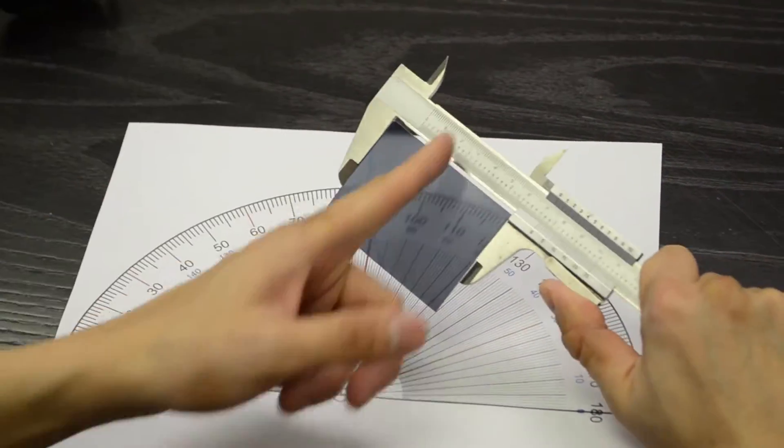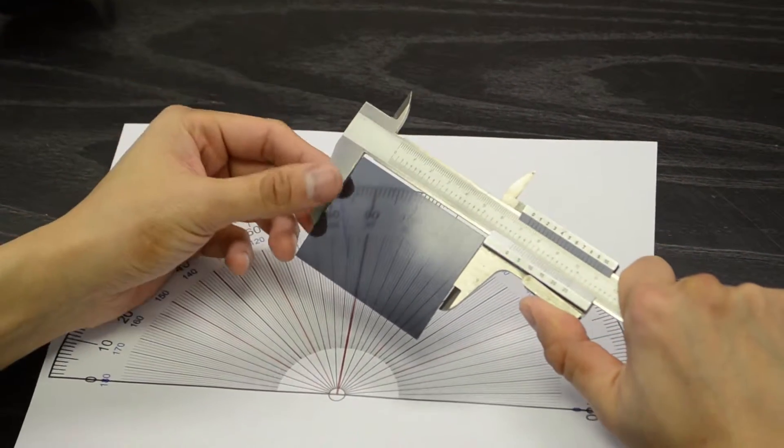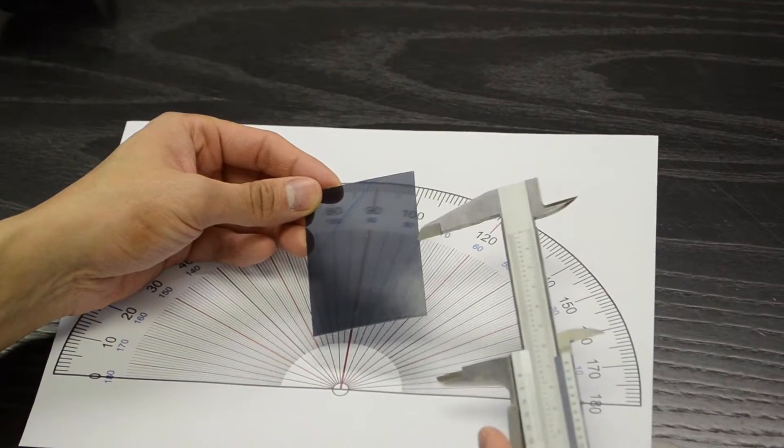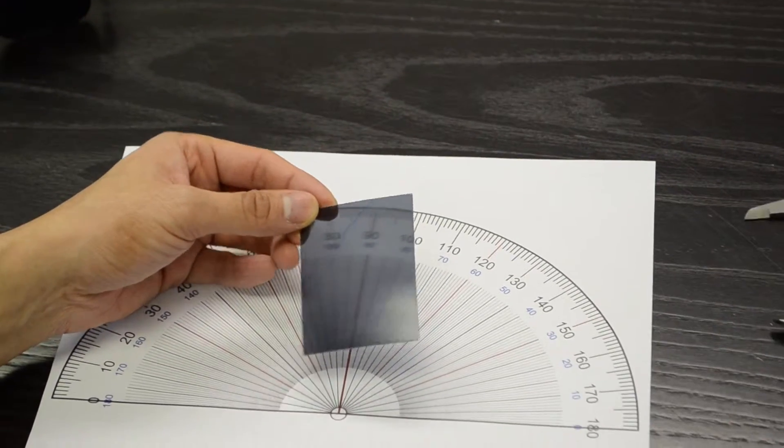And so what we want is to bisect the lens itself, just divide it in half equally. And so 71 divided by 2 is 35.5. So you just mark off the 35.5 on one side, mark off 35.5 on the other side.